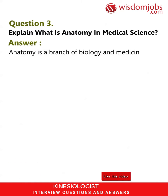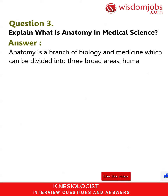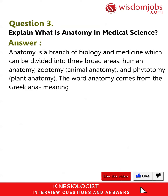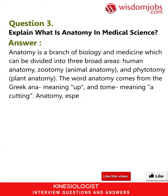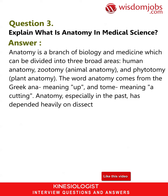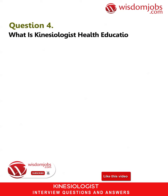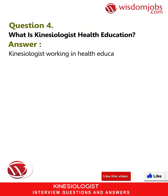Question 3: What is anatomy in medical science? Anatomy is a branch of biology and medicine which can be divided into three broad areas: human anatomy, zootomy (animal anatomy), and phytotomy (plant anatomy). The word anatomy comes from the Greek 'ani' meaning up and 'tome' meaning a cutting. Anatomy, especially in the past, has depended heavily on dissection.